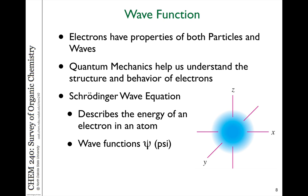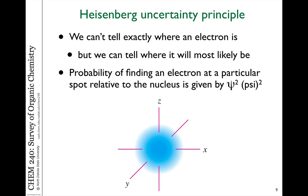We talk about electrons and where they reside in terms of the orbitals. Those orbitals are described by quantum mechanics as a wave function. There are equations to describe the highest probability of finding an electron in a particular space for a particular orbital at a specific energy level. We're not going to deal a lot with quantum mechanics in this class, but I want you to realize that these are all just mathematical probabilities of where we best find an electron. We don't know exactly where an electron is at any given time, but we can tell where it's most likely to be.